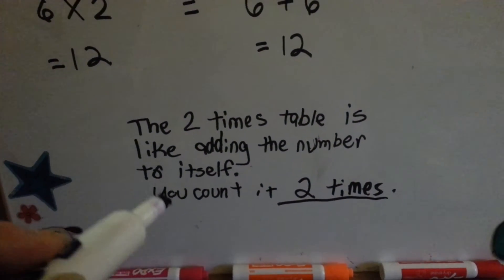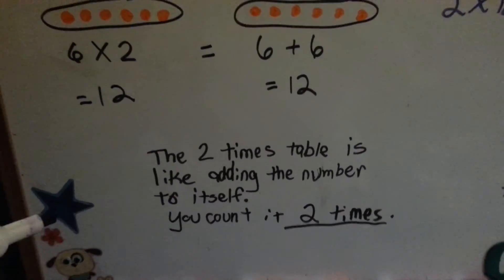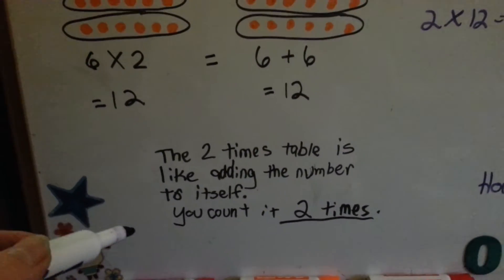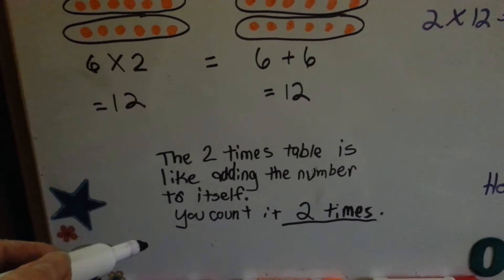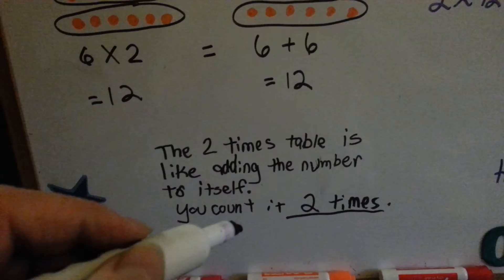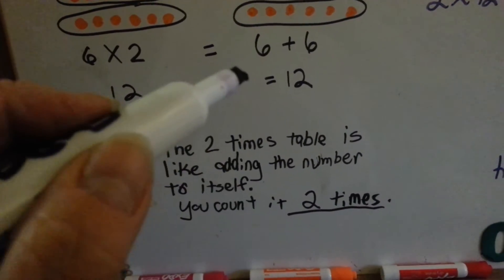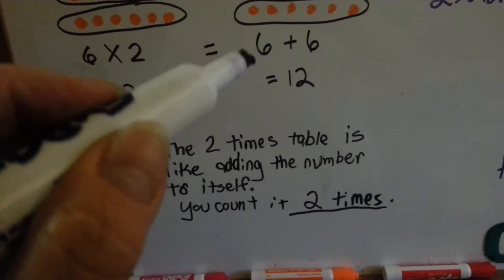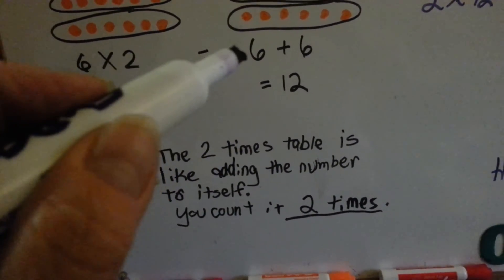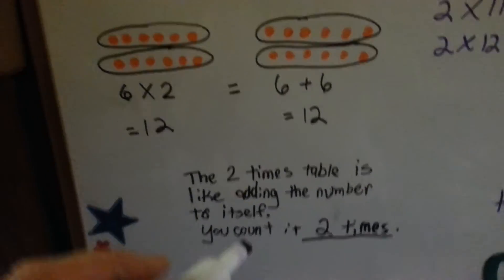You count it 2 times. In any other times table, like 6 times 6, then you would count a 6 six times. That's a lot — that would be 36.